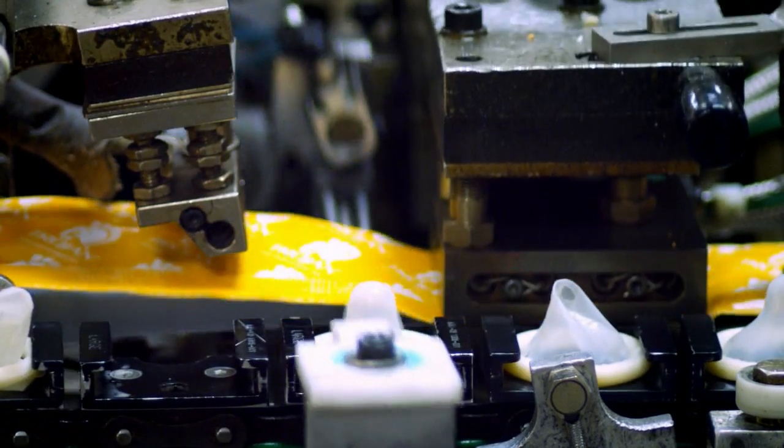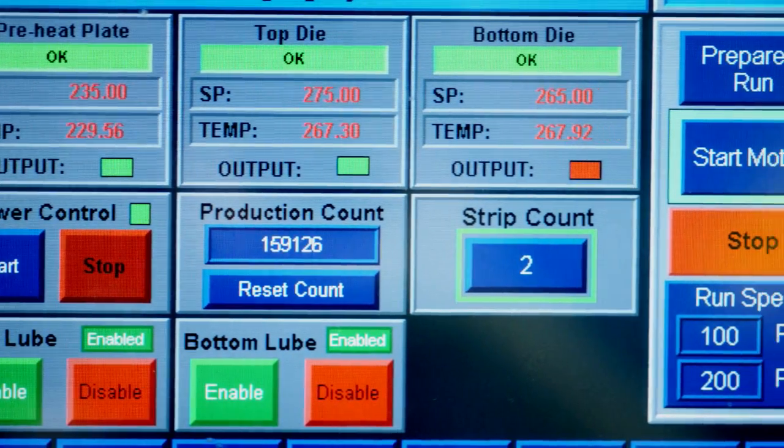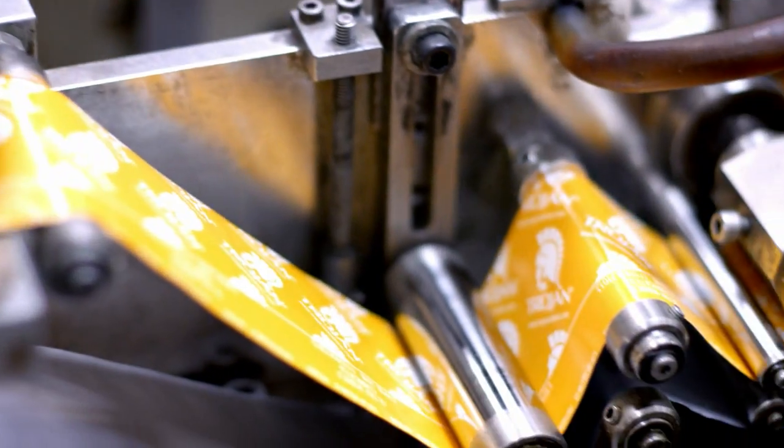Here, the condoms are placed in their final protective wrapper. These machines both electronically test and then wrap each condom. As the condoms are wrapped, they're simultaneously injected with a lubricant to maximize performance, protection, and pleasure.